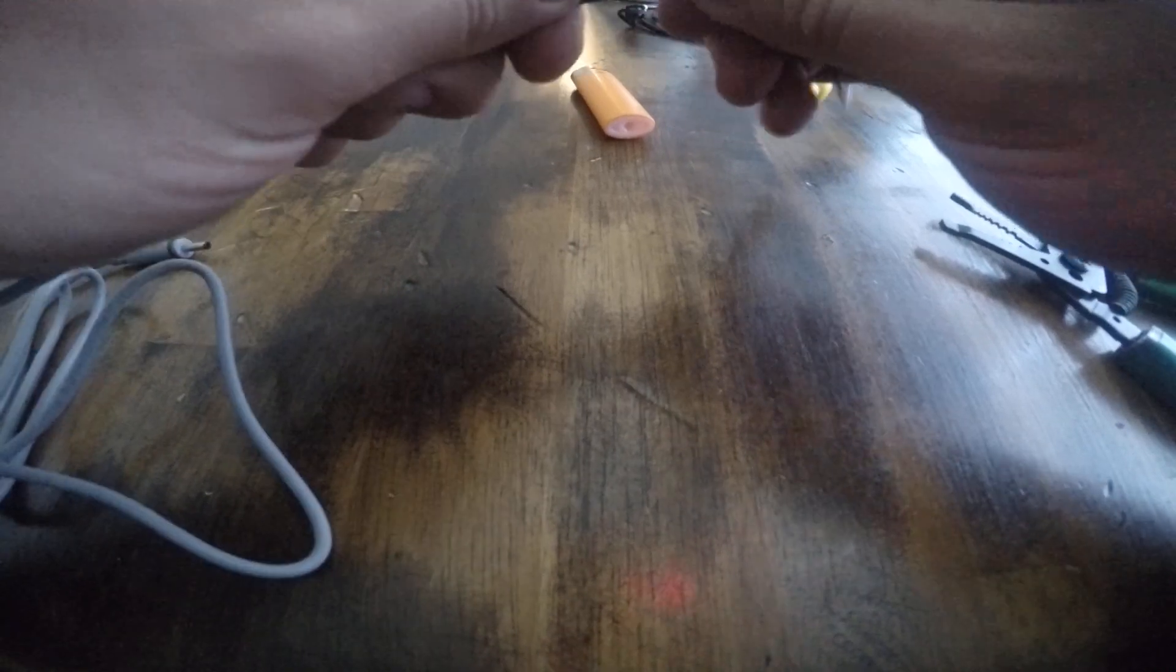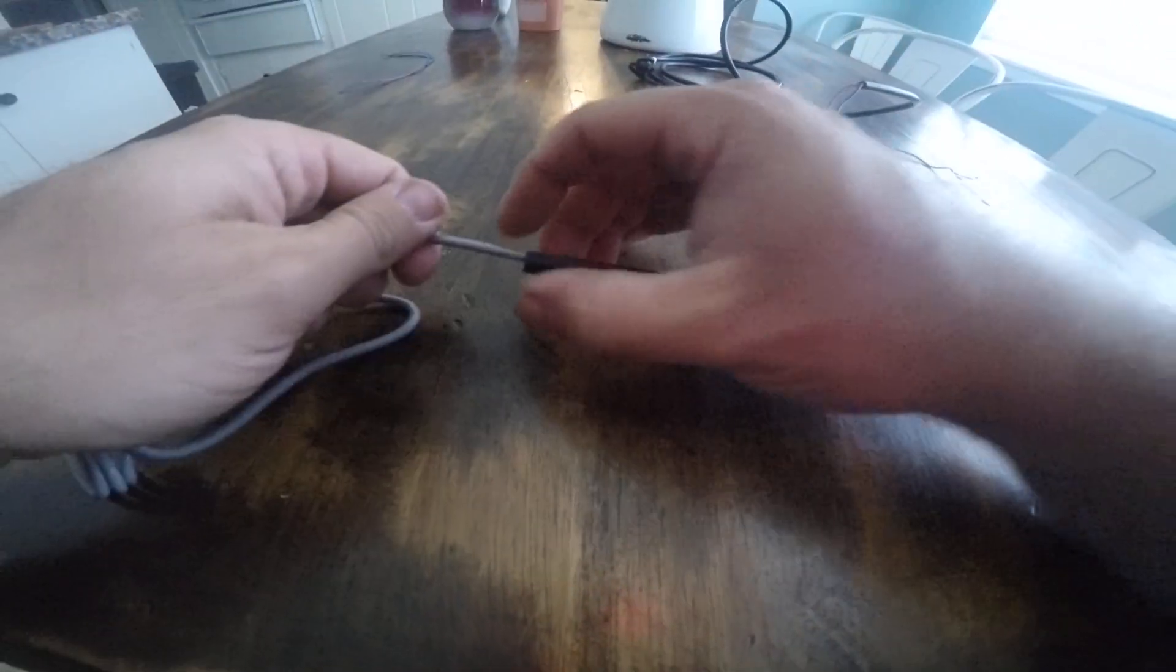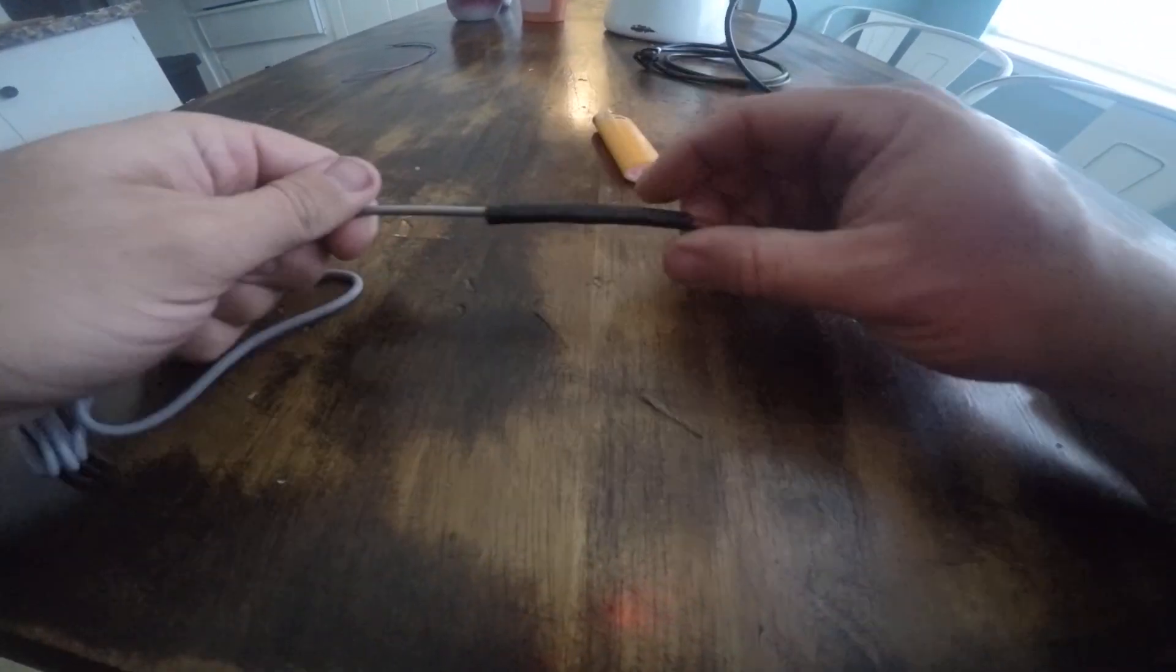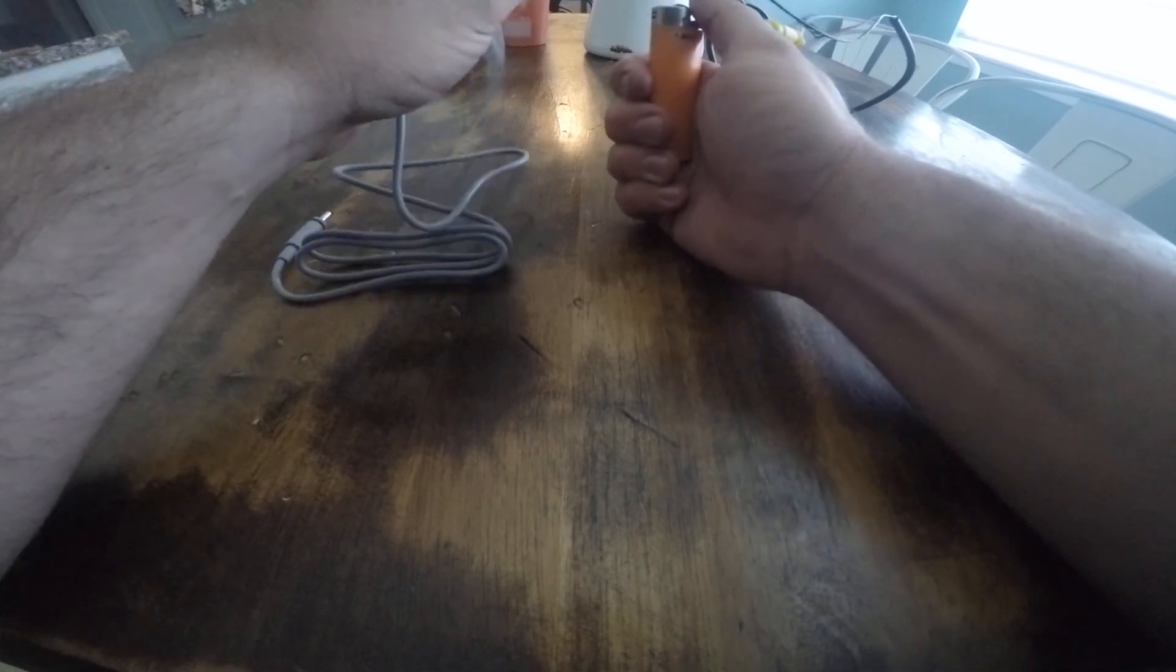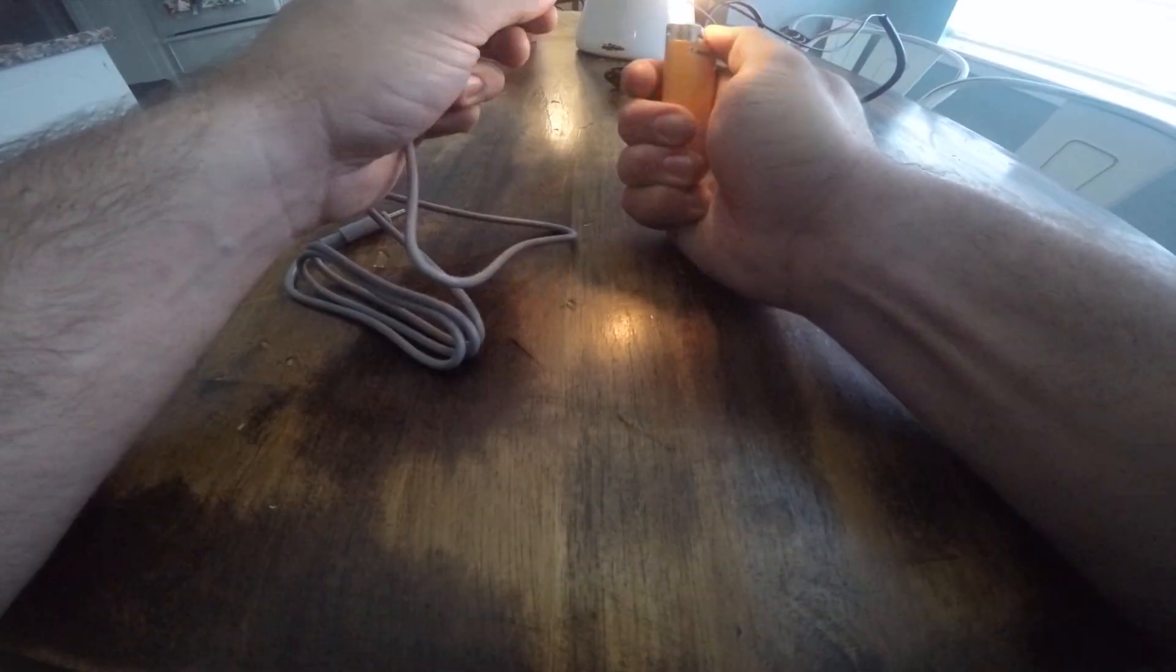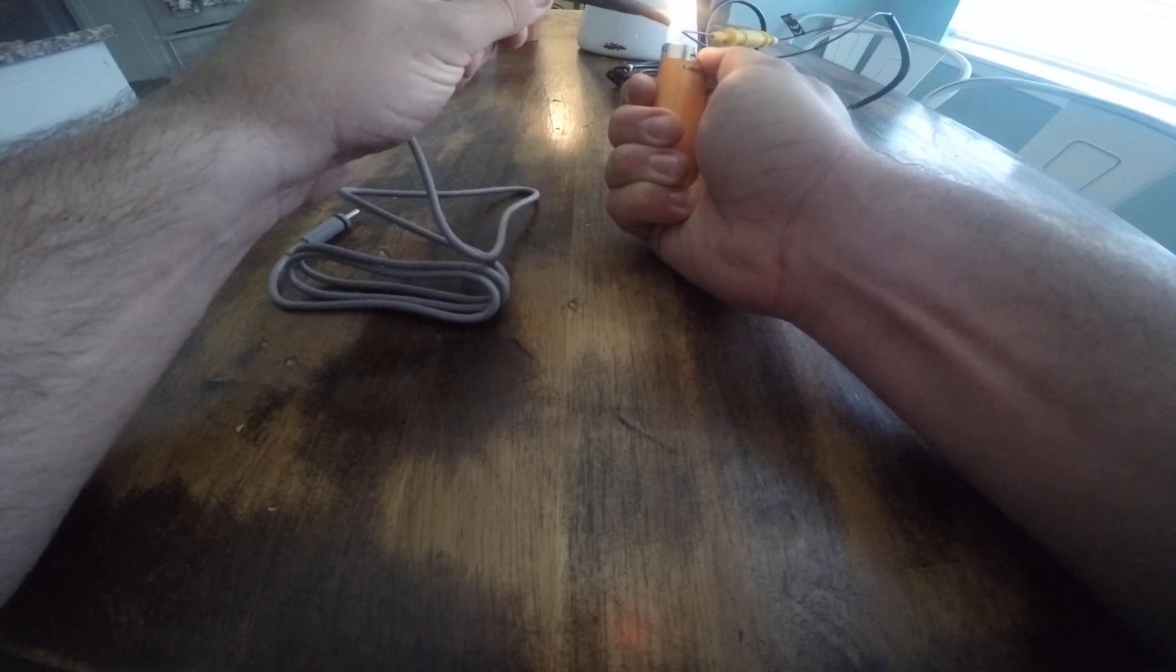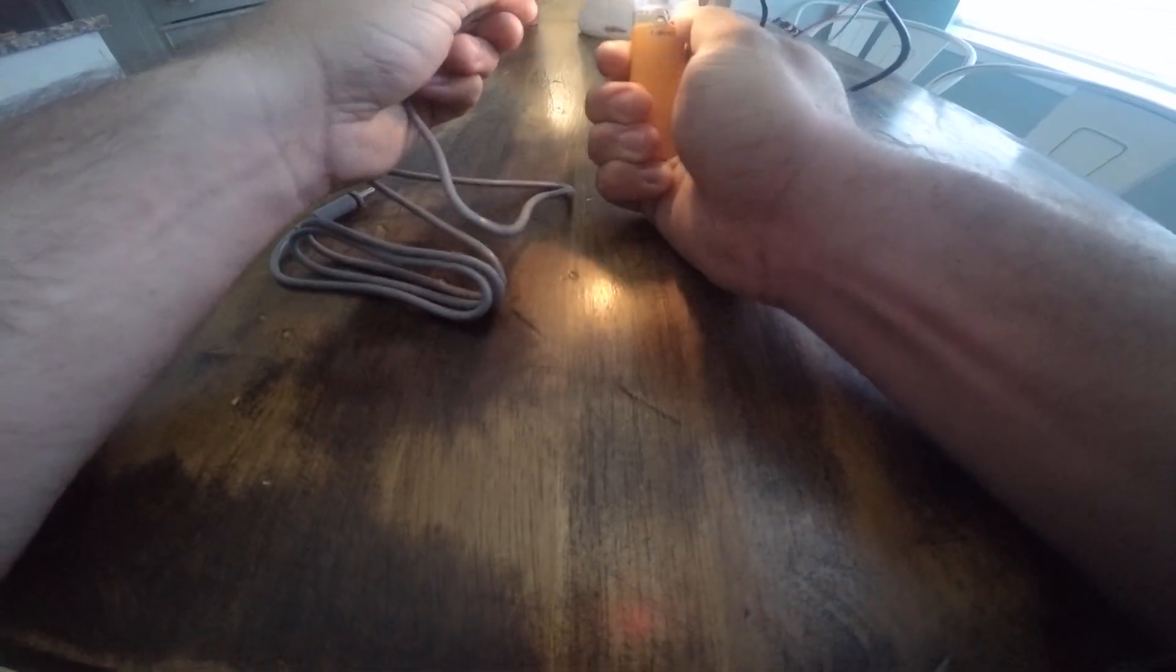Next thing you're going to do is you're going to put all of it inside the heat shrink. Lighter. You can hold it away or you can put the flame directly on it. I put the flame directly on it and just move it back and forth. That's going to do the job. And it's not going to cause any problems as long as you're moving it back and forth.